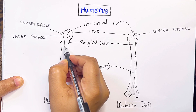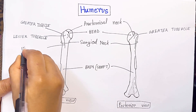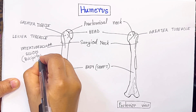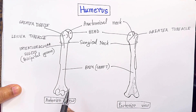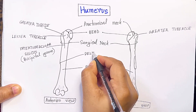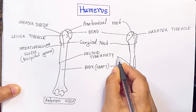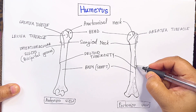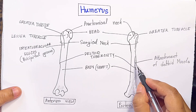Now this is the bicipital groove, or we can say the intertubercular sulcus. Now we will see here the deltoid tuberosity — this is the deltoid tuberosity in the posterior view. Now this is the attachment of the deltoid muscle.